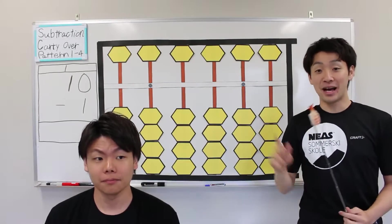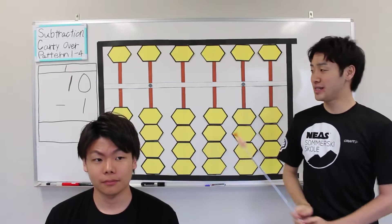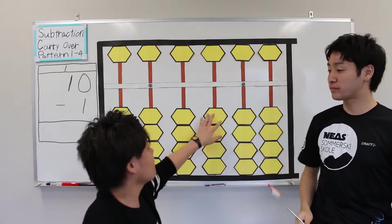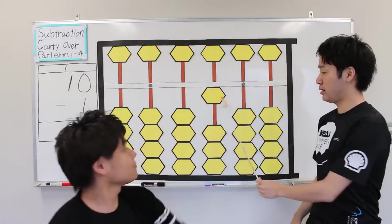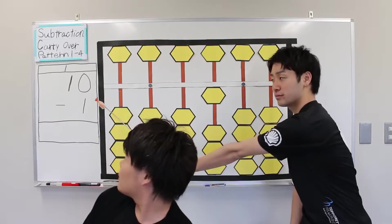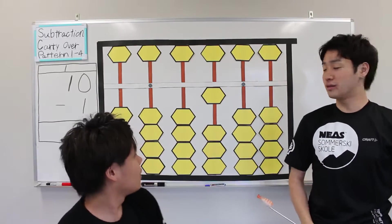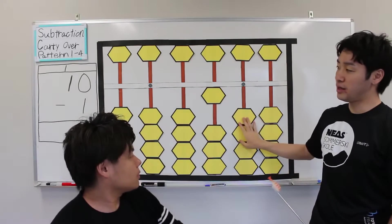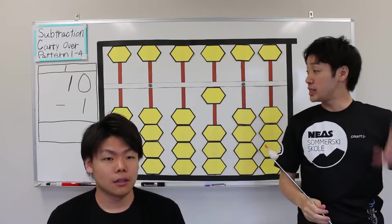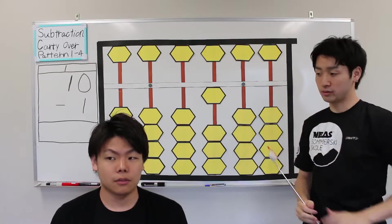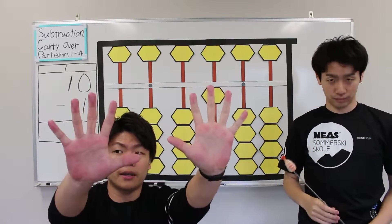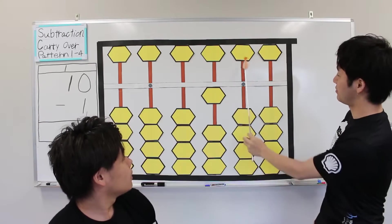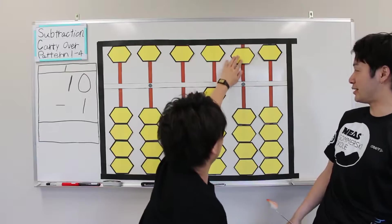Question number 1. First, 2. Plus 10. Next, exit. Minus 1. Let's see. What is the answer? 10 minus 1 equals 9. Add 9.